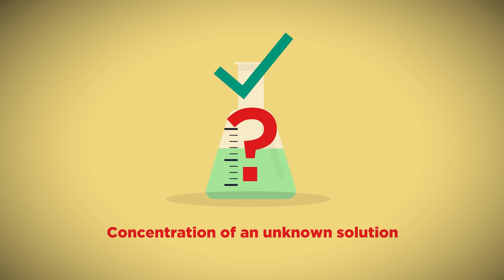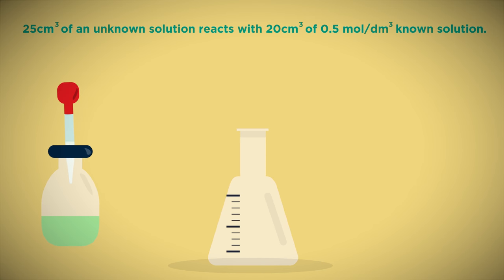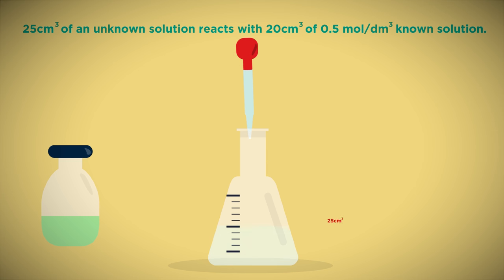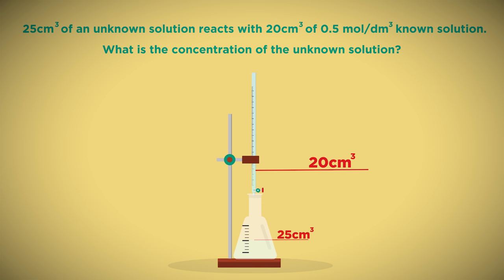Let's look at an example. We have carried out a titration. We started with 25 cubic centimeters of an unknown solution in the conical flask. We then added 20 cubic centimeters of the known solution, concentration 0.5 mole per cubic decimeter, to complete the reaction. What is the concentration of the unknown solution?